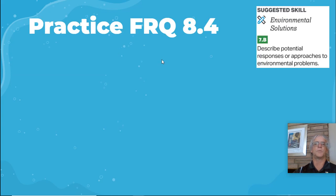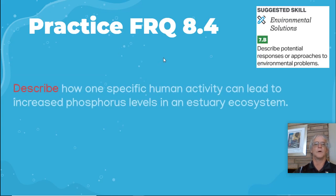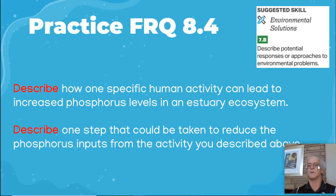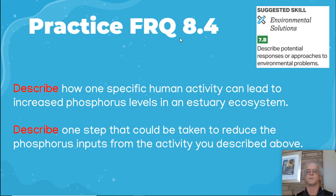Practice FRQ 8.4: One, describe how one specific human activity can lead to increased phosphorus levels in an estuary ecosystem. Two, describe one step that could be taken to reduce the phosphorus input from the activity you described. Hopefully that was helpful — thank you very much.